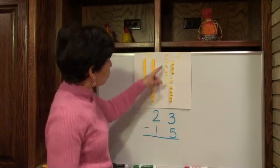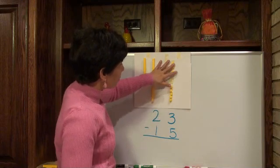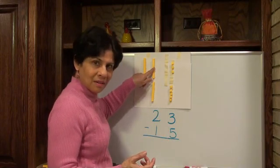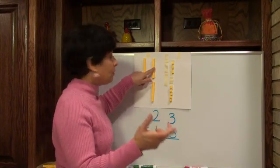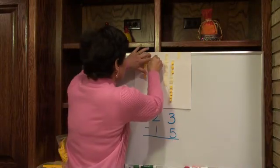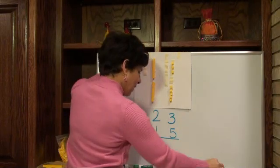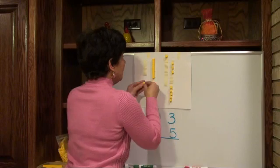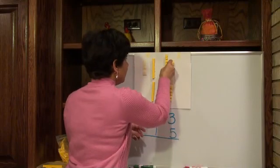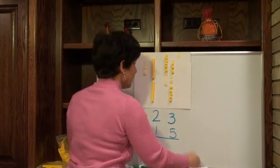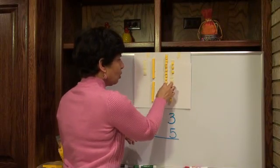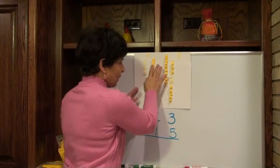So now, if you look at it, you say, well, how can I take away five from three? So what do you do? You trade one of the tens for ten ones. Or if you call it longs and cubes, you trade one long for ten cubes. Let's do that now. So here I take it away, and I'm going to stick ten cubes or ten ones for this one here.